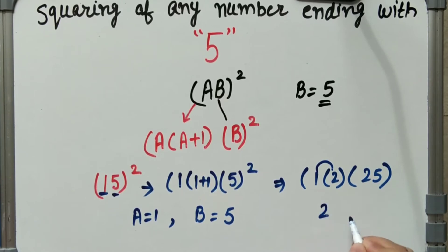1 into 2, that is equals to 2, 25. This is our answer. It means 15 square, that is equals to 225.